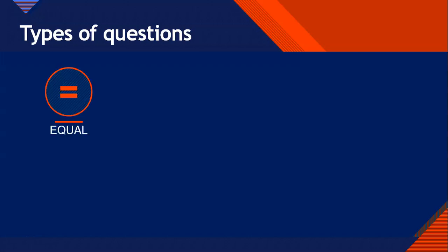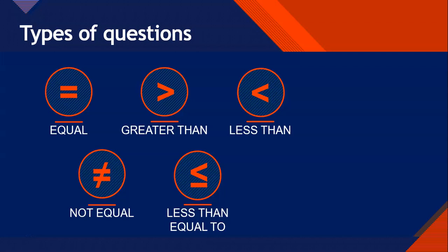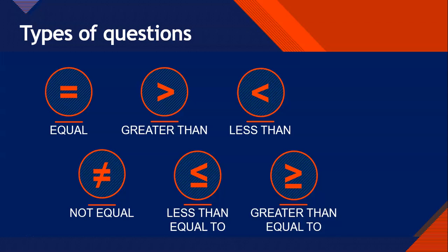Let's go through the six operators. The first three are: equal to, greater than, and less than. The other three are their opposites. The opposite of equal is not equal. Now, the opposite of greater than is not less than — it's less than or equal to. So if you've got greater than 50, the opposite is less than or equal to 50. Therefore the opposite of less than is greater than or equal to.